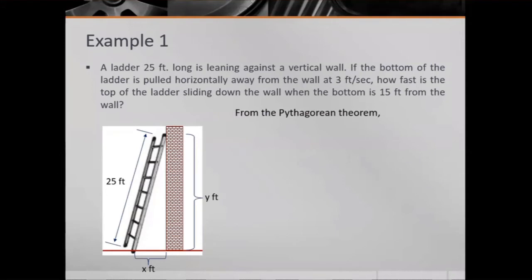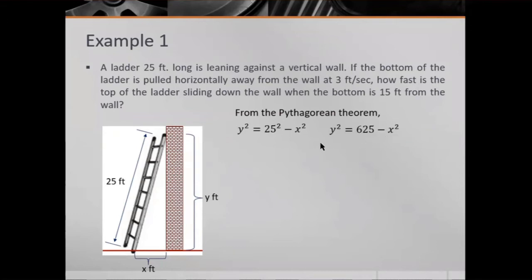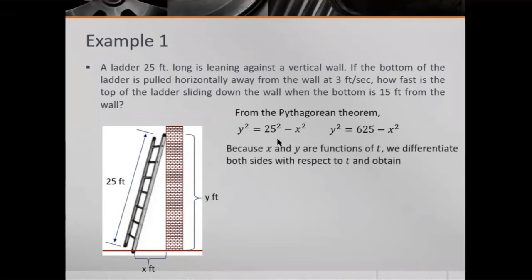From the Pythagorean theorem, since the ladder forms a right triangle, we can write: y² = 25² - x², which gives y² = 625 - x². Since x and y are both functions of t, we differentiate both sides with respect to t.